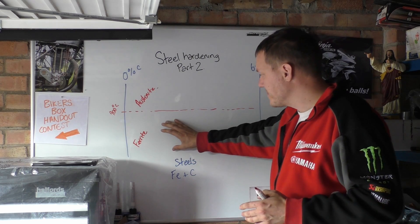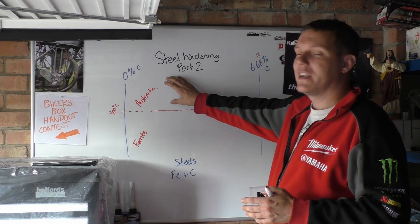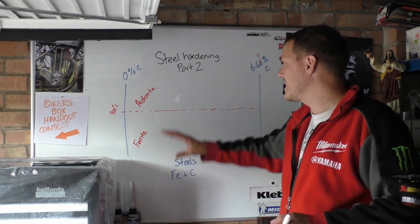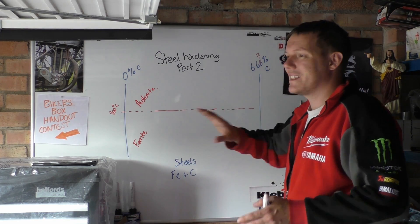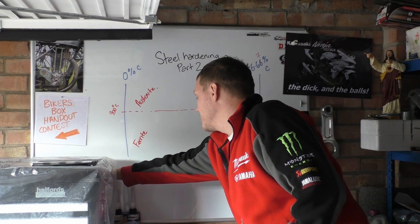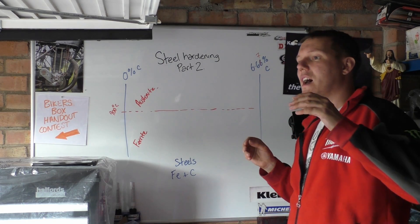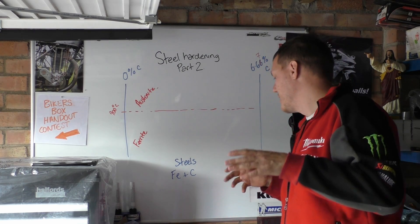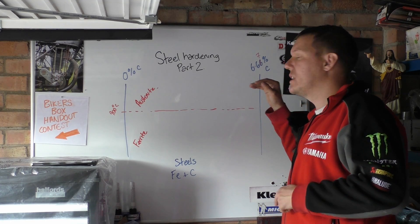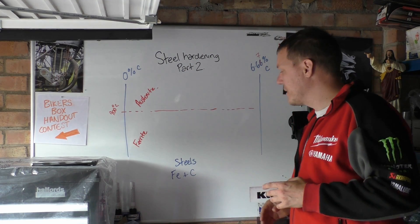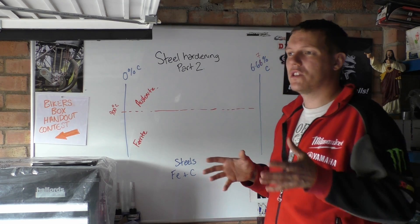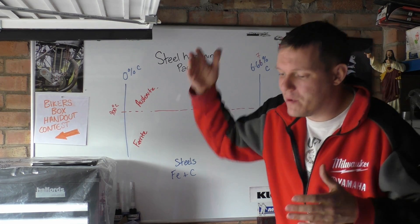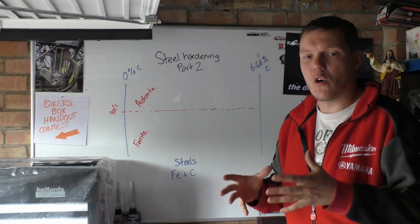Basically what happens is, when we heat up a steel, it changes. It has a phase transition. And you've got to remember, this is below its melting temperature — it hasn't melted yet, it's just glowing red hot — and the structure changes. That structure is basically what we want — that's our hard steel. Then we can cool it. If we rapidly cool it, it goes through this weird transition called martensite, it becomes martensitic, and when we drop the temperature suddenly, we lock it into that.